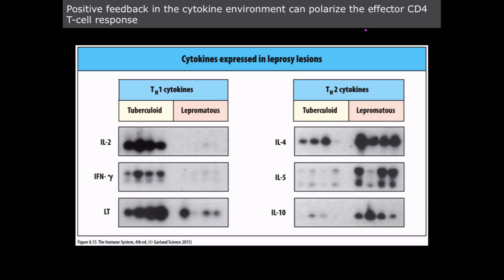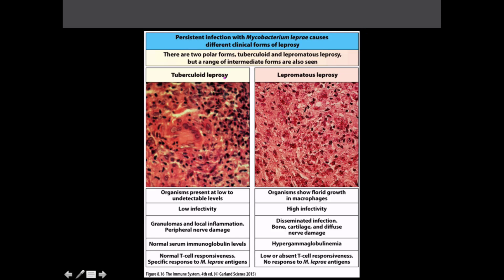But if a patient has a Th2 polarized response, large amounts of pathogen-specific antibodies are made — but they're not effective against the bacteria because the bacteria are hiding inside macrophages. Th2 is designed for orchestrating attacks against multicellular parasitic species. Here's a comparison of tuberculoid leprosy versus lepromatous leprosy, showing the difference between Th1 and Th2 responses.